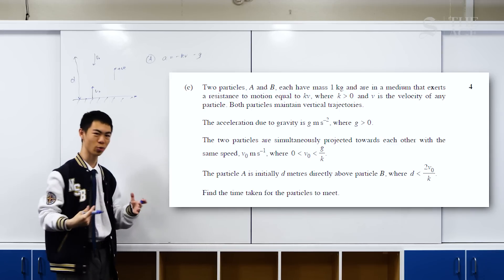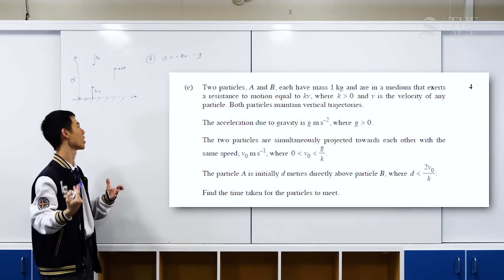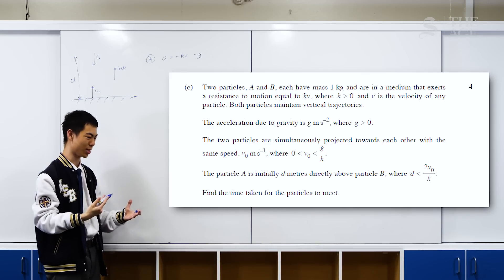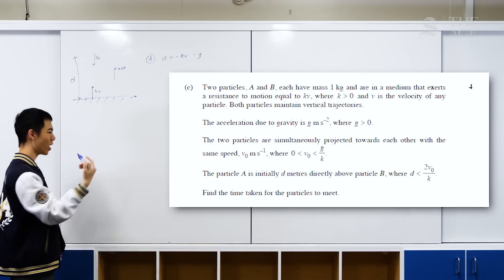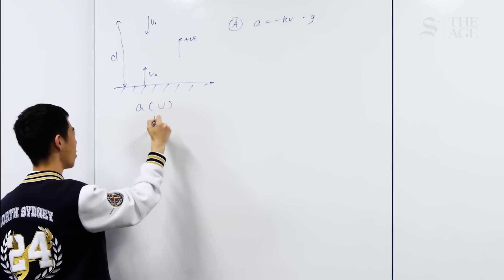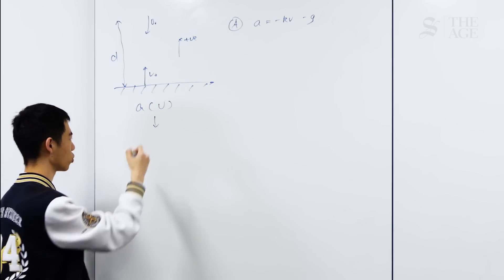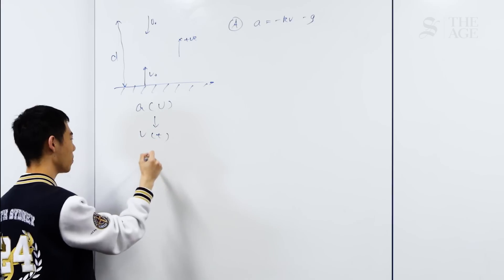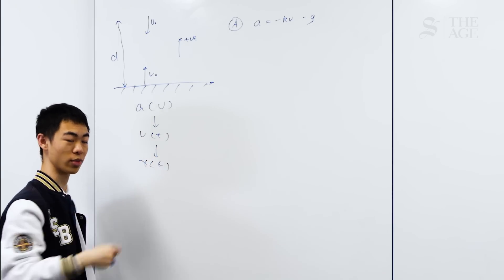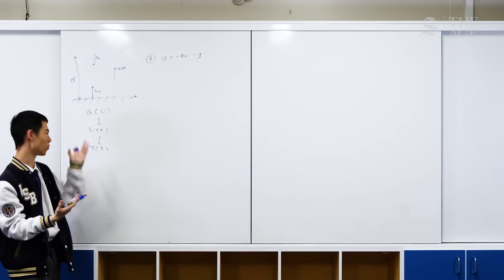We want to see what we can do with this equation. We have acceleration in terms of velocity, so we want to get to displacement in terms of time. The path we can take is acceleration in terms of velocity, from there we can go into velocity in terms of time, and from there we can go into displacement in terms of time. This is the overall flow we'll be taking.